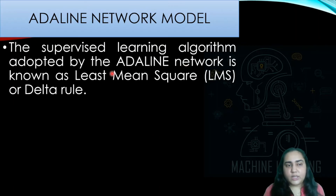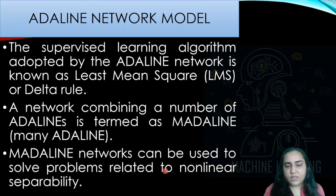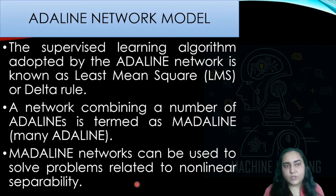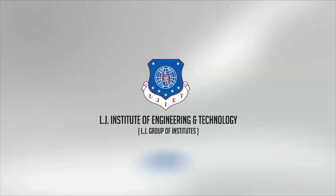The supervised learning algorithm used by the ADALINE network is called the Least Mean Square rule, also known as the LMS or delta rule. A network that combines multiple ADALINE units together is known as a MADALINE network, where M stands for 'many.' MADALINE networks can be used to solve problems related to non-linear separability. So even though ADALINE is a primitive model, combining several of them into a MADALINE network allows us to handle non-linearly separable data. I hope you understood all this — I'll see you in the next video, thank you for watching.